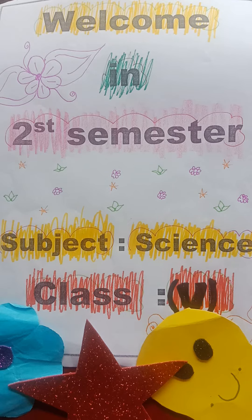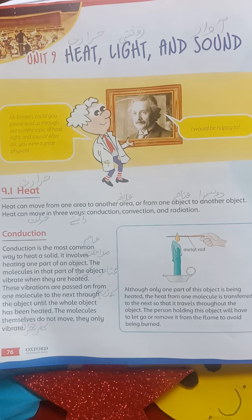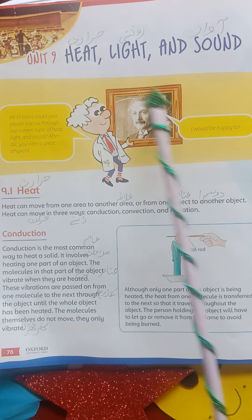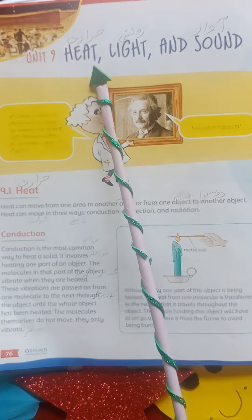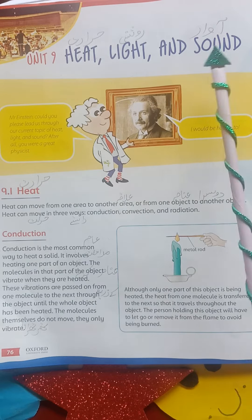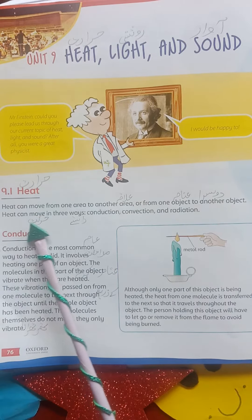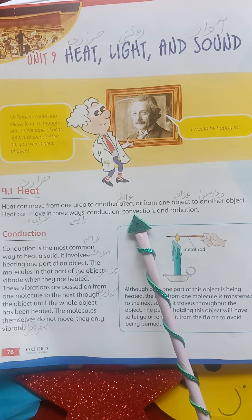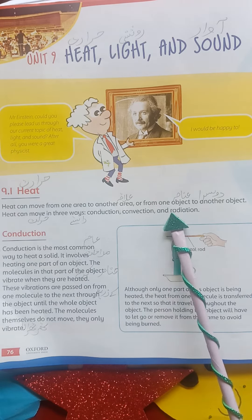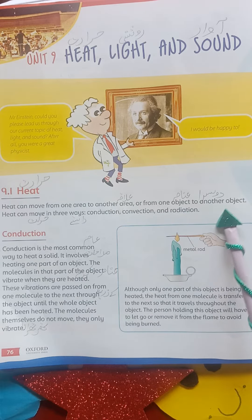So open your books. Here is our Unit Number 9: Heat, Light and Sound — hararat, roshni aur awaz. Heat (hararat): heat comes from one area to another area, from one object to another.